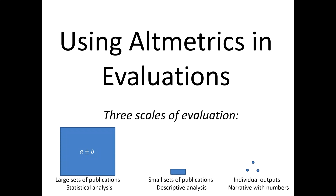We've seen different types of altmetrics and how they can be assessed. The next stage is using altmetrics in evaluations. We're going to look at three scales of evaluation: large scale — large sets of publications using statistical analysis; small sets of publications using descriptive analyses; and individual outputs for which I'd recommend a narrative supported by numbers. The appropriate type of evaluation varies from statistical to almost purely qualitative.